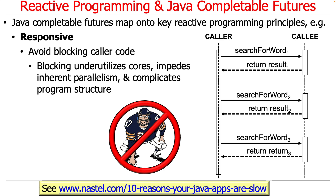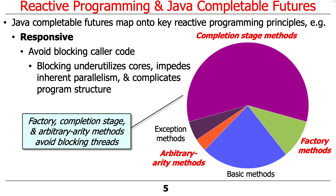The way to get around this in the completable futures framework is to use factory methods to start things running in the background, and arbitrary-arity methods which can be used to wait for a whole bunch of things to finish running asynchronously. We can use completion stage methods to avoid blocking threads, which is the desired goal in reactive computing.